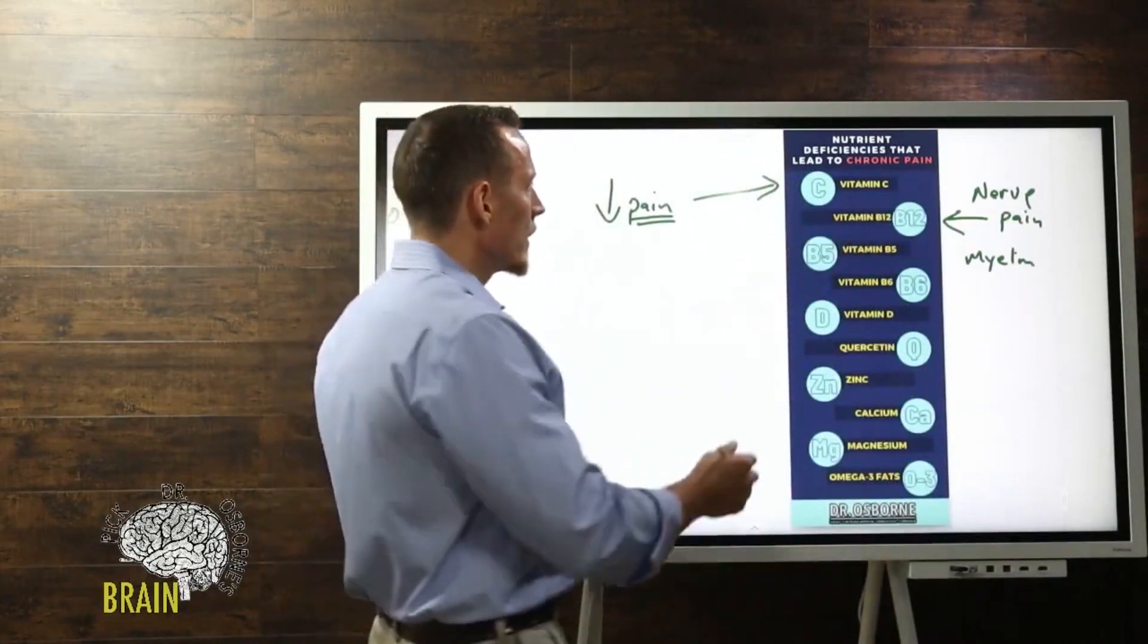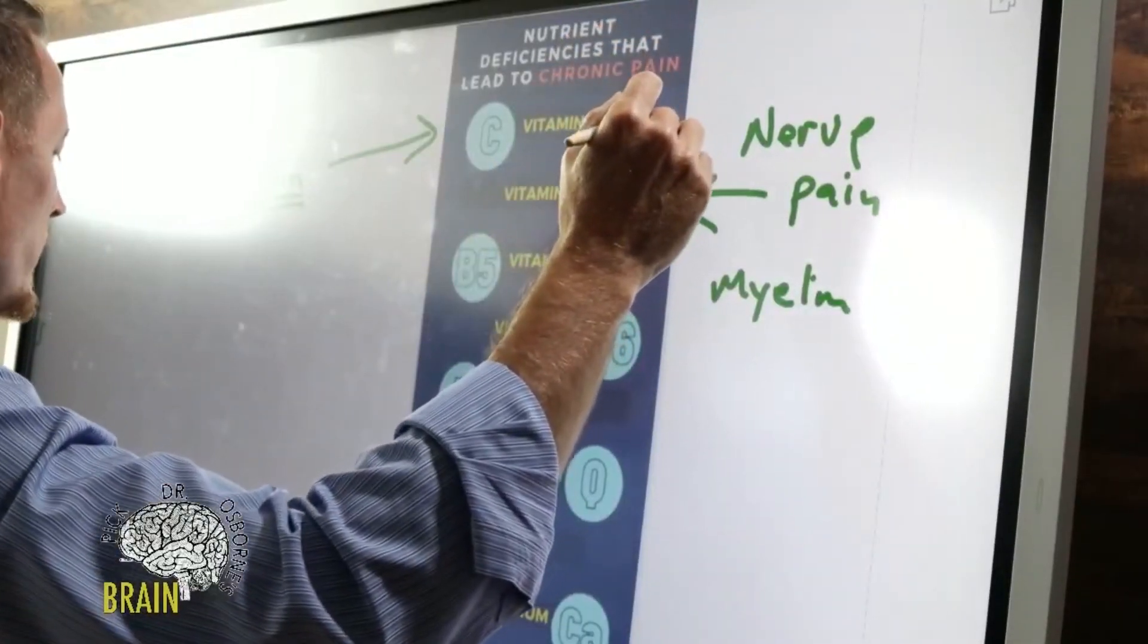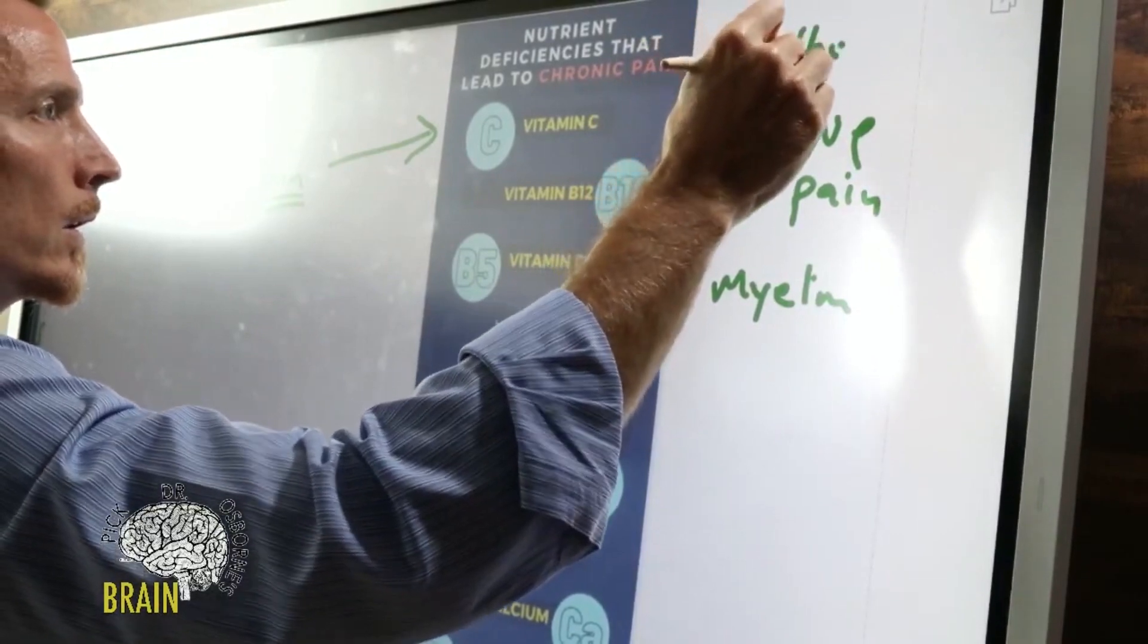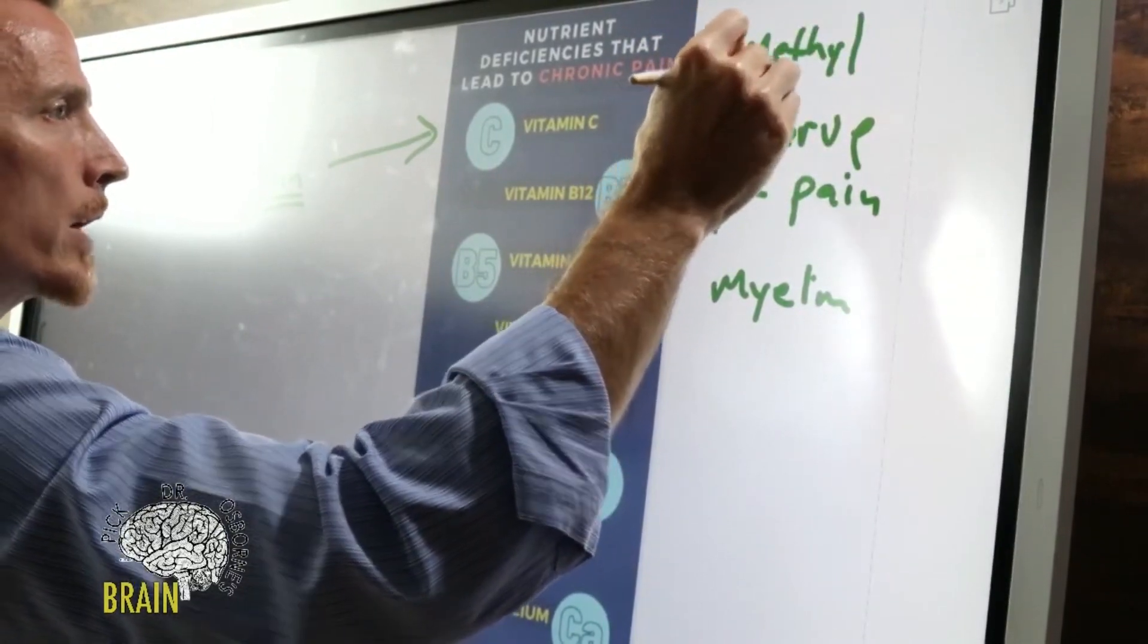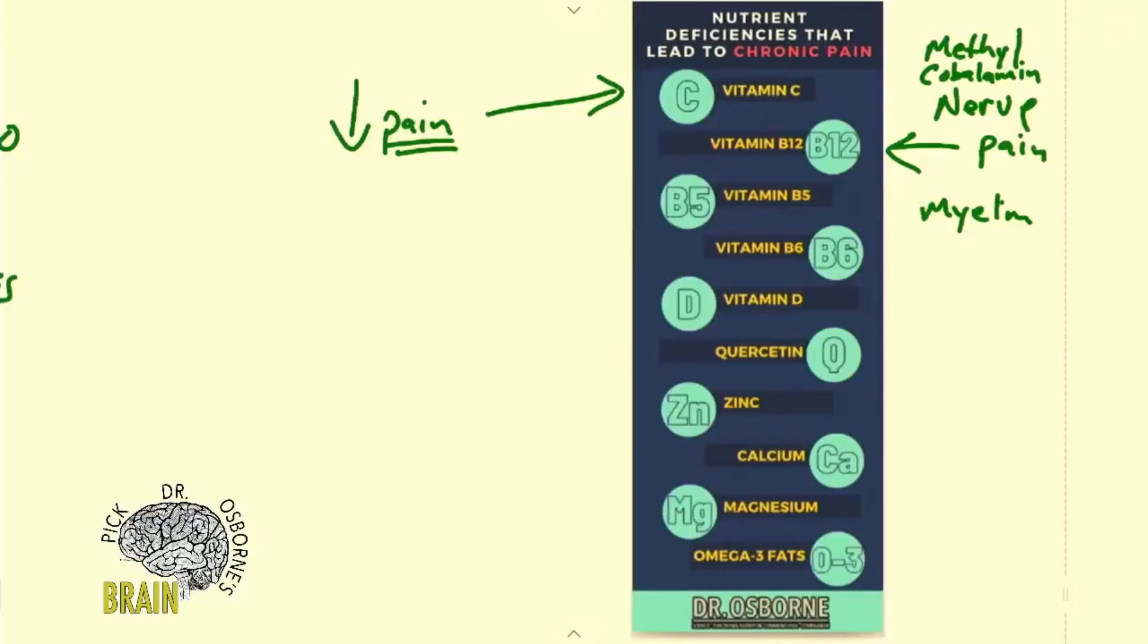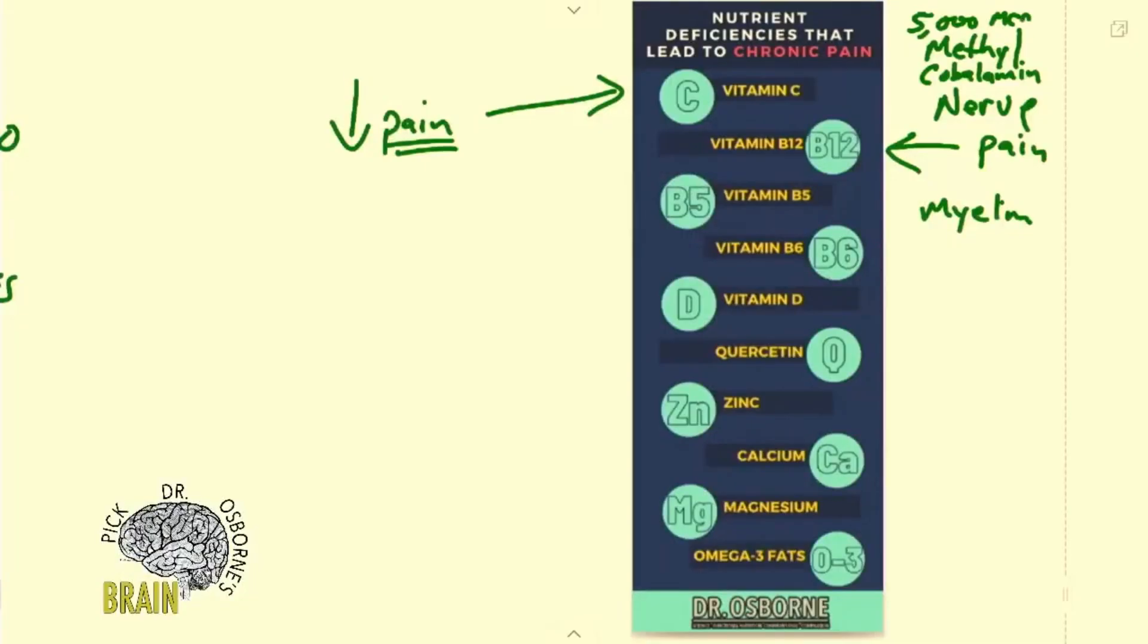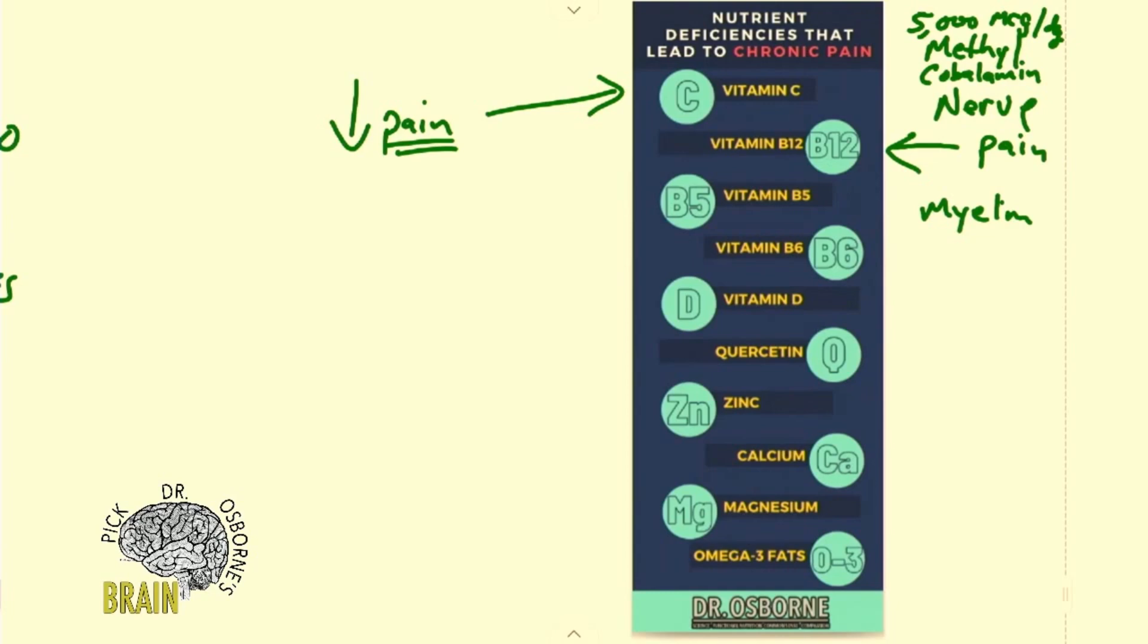My favorite form of B12 is methylcobalamin—it's the form the body prefers for most people, it's an activated form of vitamin B12. If you suspect a vitamin B12 deficiency, start somewhere in the neighborhood of 5,000 micrograms per day. It's always best to have your doctor check your levels not in your blood but inside your cell—your intracellular vitamin B12—because the blood can be quite misleading.